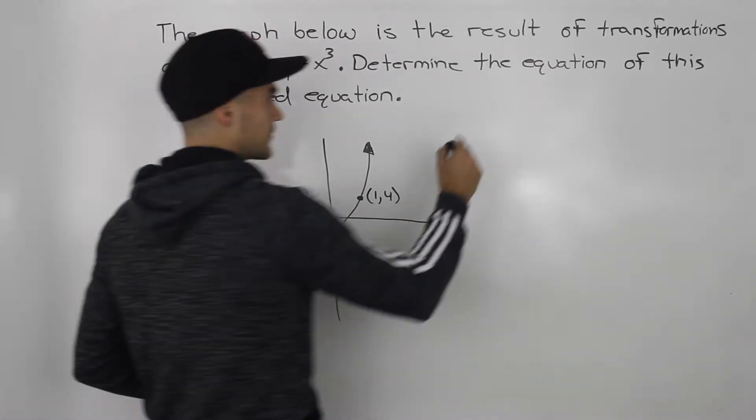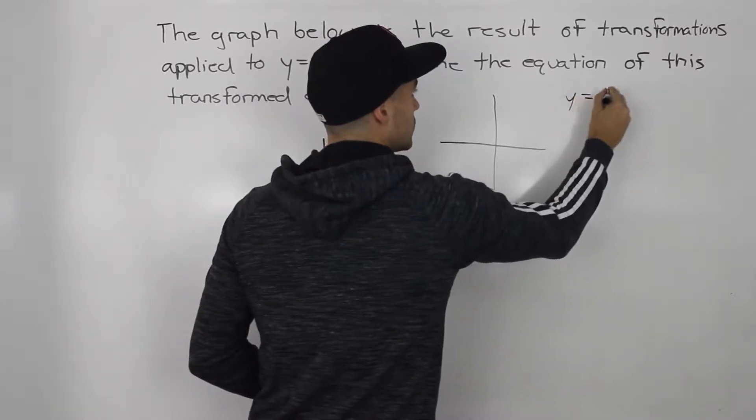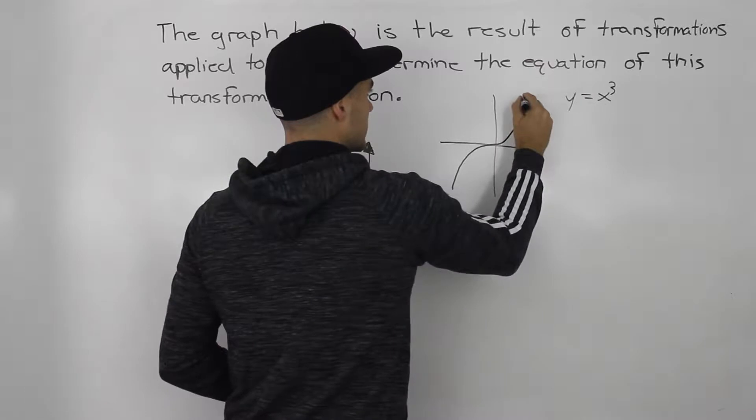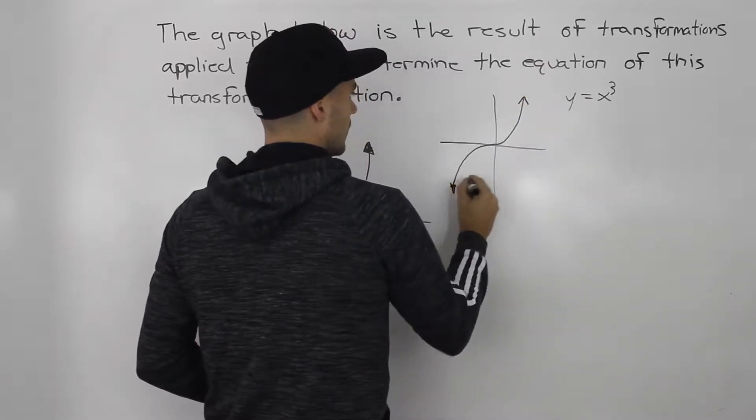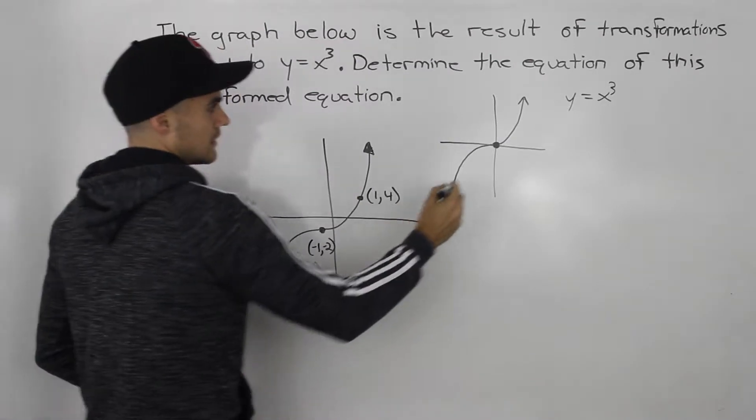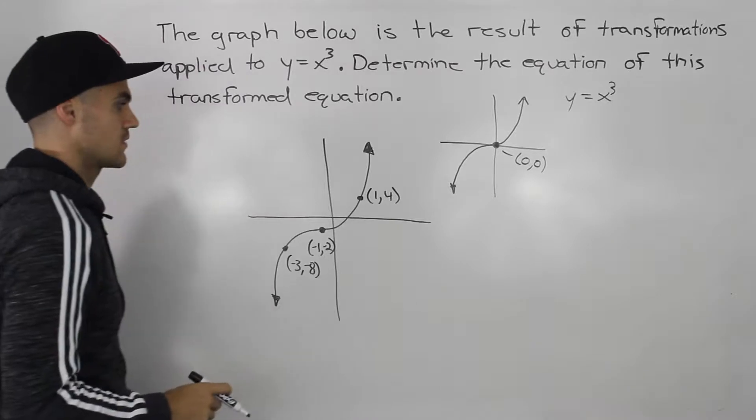So how would we do this? Well, let's start off with just the graph of y equals x cubed. The basic graph we know looks like this. And we know that this point here, this saddle point, is basically happening at 0 and 0.